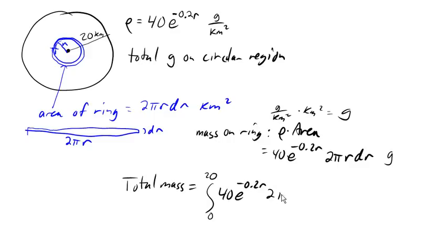And that integral will give us the total mass of pollutants on that circular area.